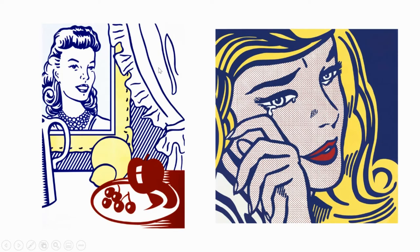And Lichtenstein doesn't always do black outlines — here are a couple of examples where he's used a really dark, almost Prussian blue outline, and then a red outline down with the fruit. I think these are more recent works and they're really quite beautiful.